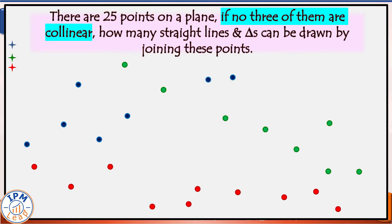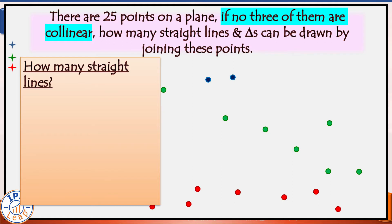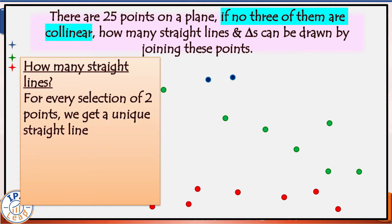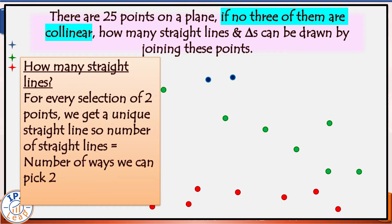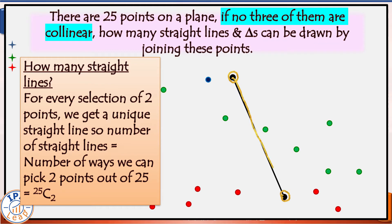Let us solve the same question in a simpler version by dropping the condition of collinearity, because solving our original question is a logical extension of this simpler case. Suppose there are a total of 25 points but no three of them are collinear. How many straight lines can we draw? If no three points are collinear, then for every selection of two points we get a unique straight line that joins them. Therefore, the number of straight lines is simply equal to the number of ways we can pick two points out of 25, which is equal to 25C2.